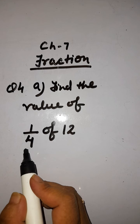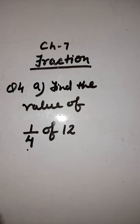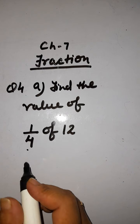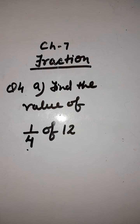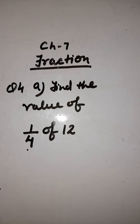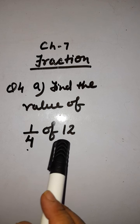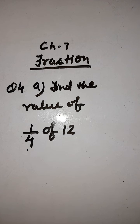12 का हमको 1 out of 4 part find out करना है. It means अगर आपको किसी ने 12 toffees दी हैं, और आपसे पूछा गया है कि आपको उसमें से 1 out of 4 निकालना है — 12 में से 1 out of 4 आपको अपने पास रखना है और सारी toffees वापस करनी है. तो आप कितनी toffees अपने पास रखेंगे? 1 out of 4 तो समझ में है कि 1 out of 4 आपने निकालना है 12 में से.